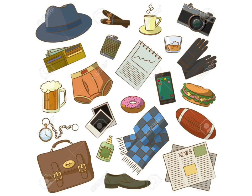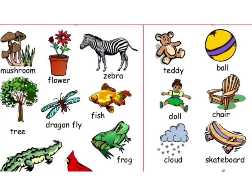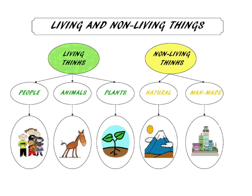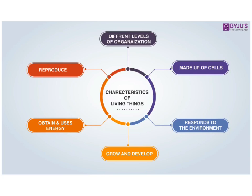But which of these things are living and which ones are non-living? How do we separate them as living and non-living? Actually, living things have some common characteristics which make them alive. Non-living things do not have these characteristics. So today we will study those characteristics one by one.